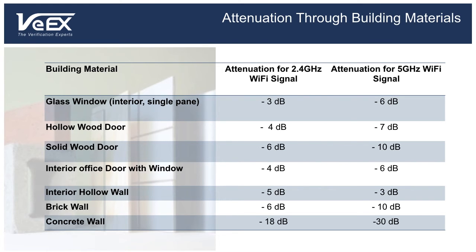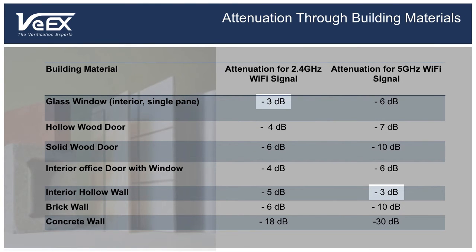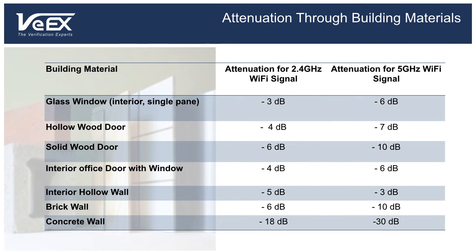The dB scale is logarithmic. This means that a 3 dB loss corresponds to cutting the transmit power in half, while a 10 dB loss corresponds to dividing the transmit power by 10, and a 30 dB loss means cutting the transmit power by 1000. Also note that the 2.4 GHz frequency signals are not attenuated the same way as the 5 GHz signals.